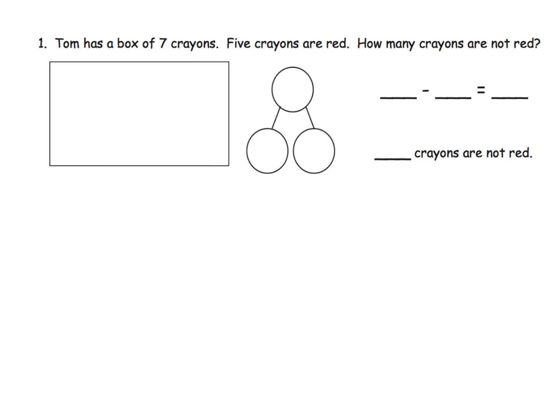So let's do some practice. Tom has a box of seven crayons, and five of them are red. How many crayons are not red? All right, so let's begin by modeling the seven. So I'm going to do that using the ten frame style. One, two, three, four, five, six, seven.